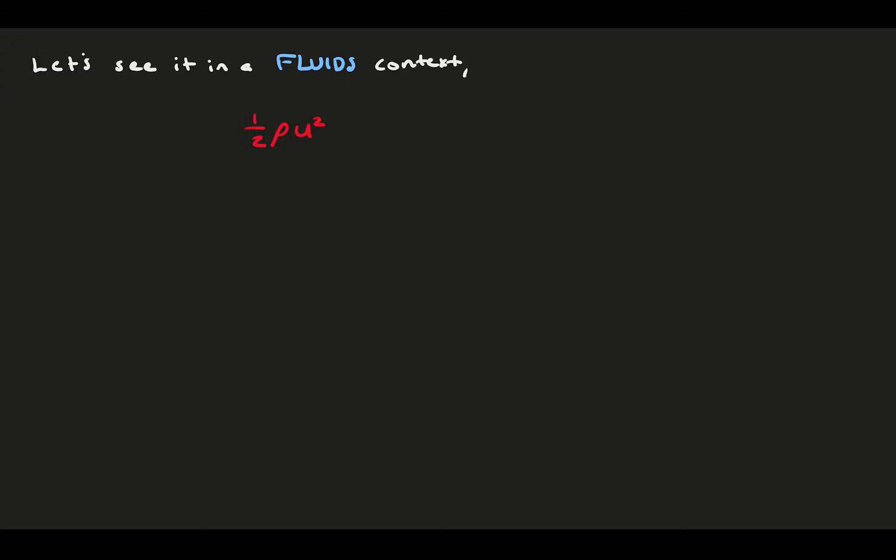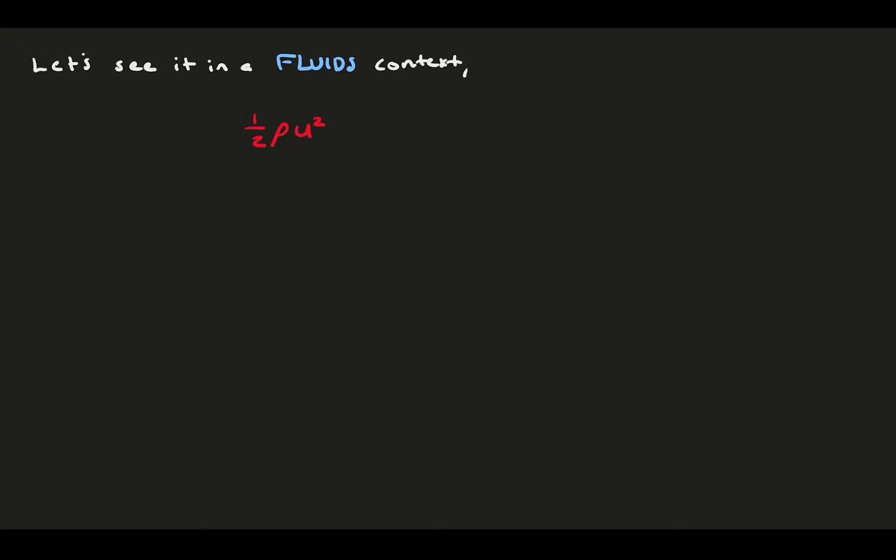This is actually pretty important to fluid mechanics, because we get nonlinear terms in our equations, like u times v, and these two velocity signals are often correlated. If a bump in a channel flow causes the streamwise velocity to fluctuate, it also likely impacts the vertical velocity, so the velocity fluctuations in the different directions tend to correlate with one another.